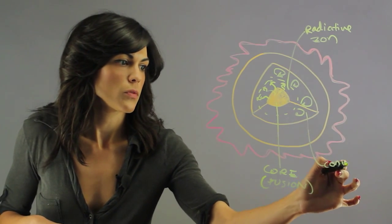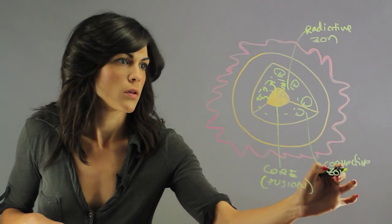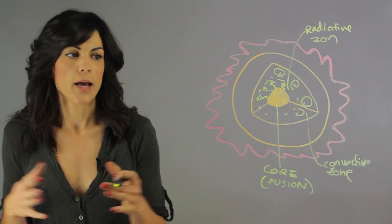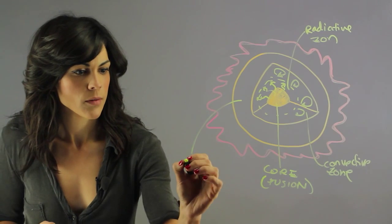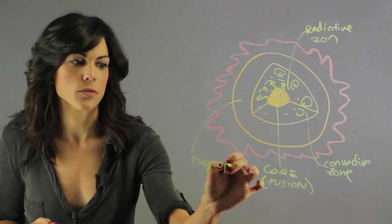So this is the convective zone, and then after that we actually have the surface of the Sun and that's the photosphere. When you really look at the Sun, what you're looking at is the photosphere.